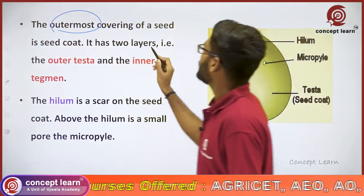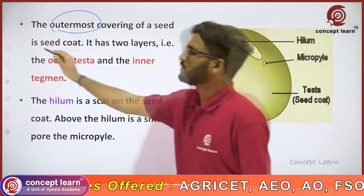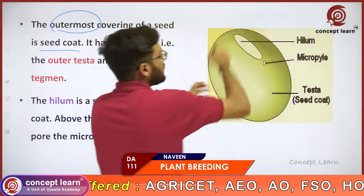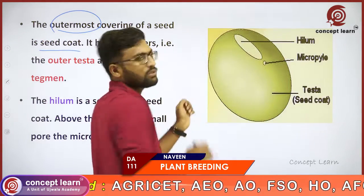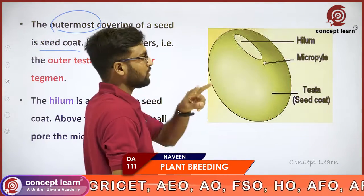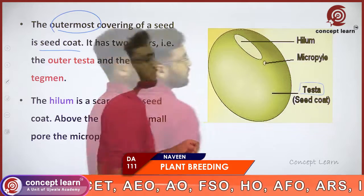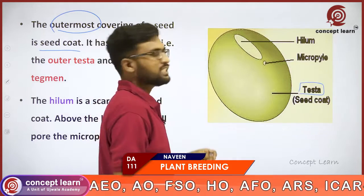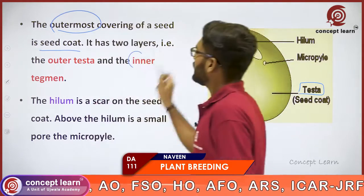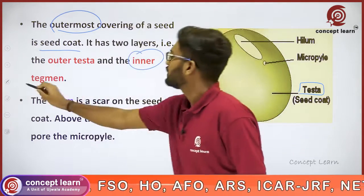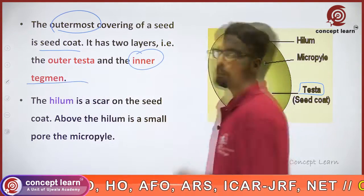The outermost covering of a seed is known as the seed coat. The seed coat has two layers: the outer layer is called testa, and the inner layer is known as tegmen.